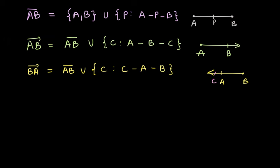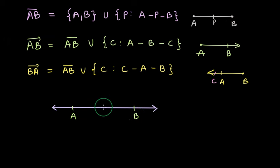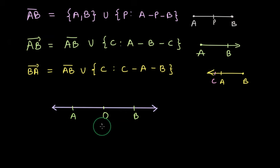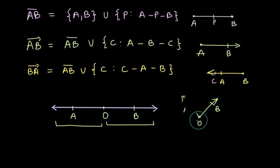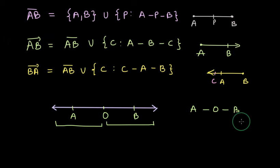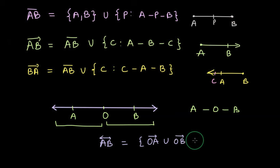Now we want to see the set notation for a line. Let's draw a line with points A and B, and one more point O between A and B. We can write the set notation for line AB in many ways. One way is writing the union of ray OA and ray OB. But we need to ensure that A, O, B are collinear, so we must mention that point O is between A and B. So line AB = ray OA union ray OB, such that point O is between points A and B.